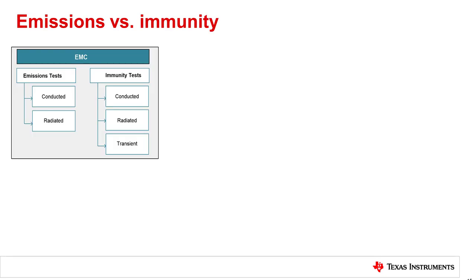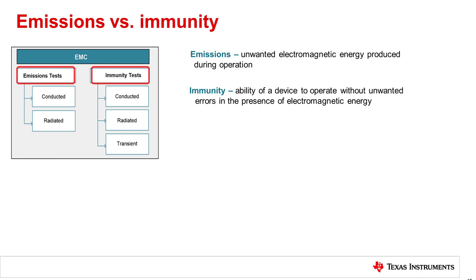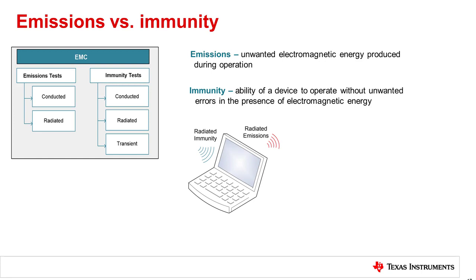EMC consists of two types of tests: emissions and immunity testing. Emissions is the generation of unwanted electromagnetic energy that a device or system produces during operation, and is caused by high frequencies. Immunity is the ability of a device to operate in the presence of electromagnetic interference without resulting in unwanted errors. Because all electronic circuits radiate some level of energy, steps must be taken in design to minimize emissions and increase immunity.